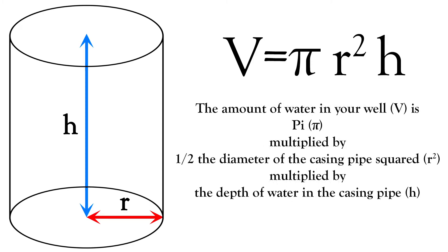Or we could say the amount of water in your well, which is represented by V, is pi multiplied by half the diameter of the casing pipe squared multiplied by the depth of water.